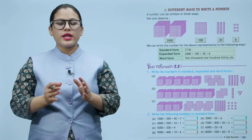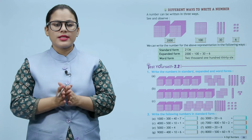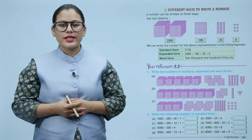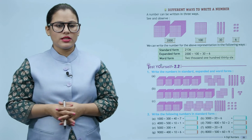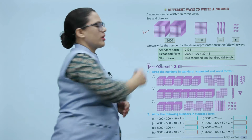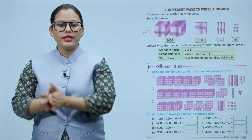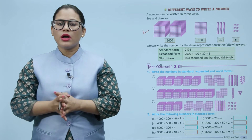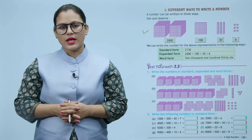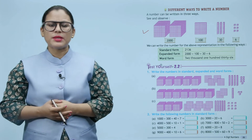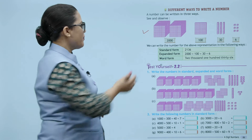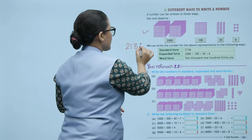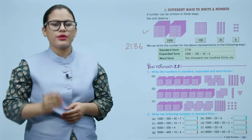Different ways to write a number. A number can be written in three ways — see and observe. We can write the number for the above representation in the following ways. Standard form: two, one, three, six — that is two thousand one hundred thirty six.